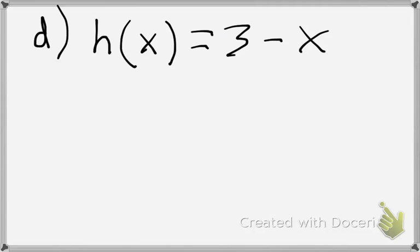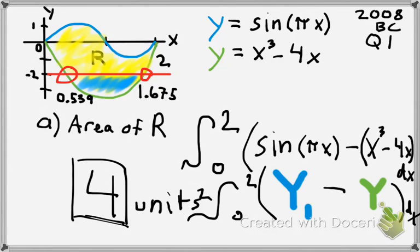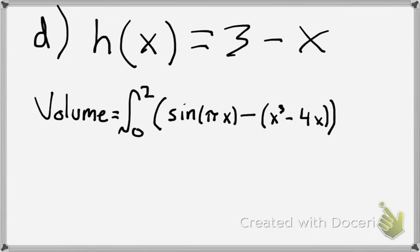The last part is D. The region r models the surface of a small pond at the points in r at a distance x from the y-axis. The depth of the water is given by the function h of x equals 3 minus x. Find the volume of water in the pond. If we want to find the volume, we would just take the region r, which was what the graph looked like back here, times the depth of the pond, which was given to be h of x. You would just multiply the two together, and you would get times 3 minus x. Remember, you're integrating, so keep your dx there.